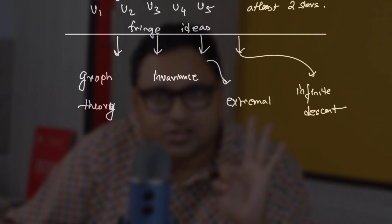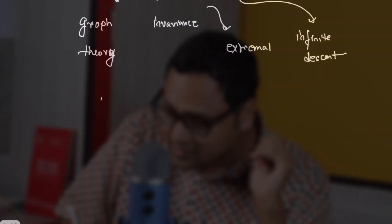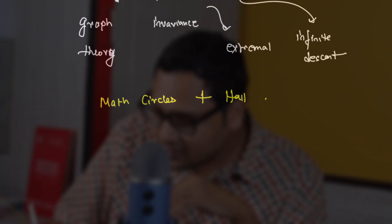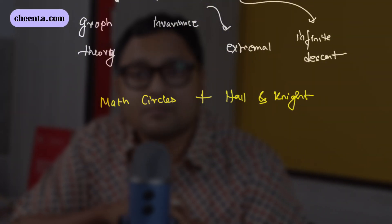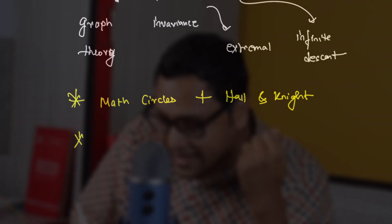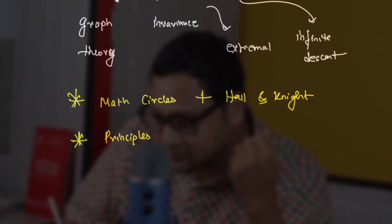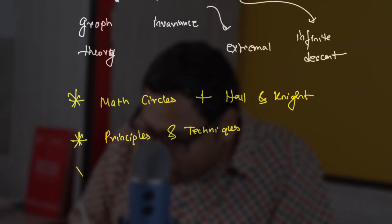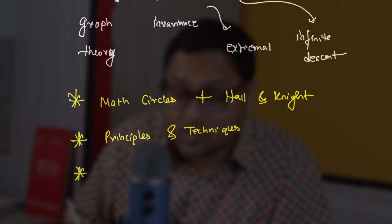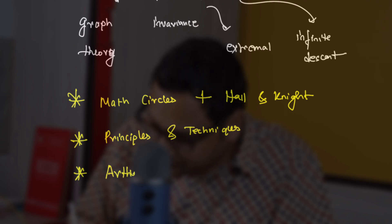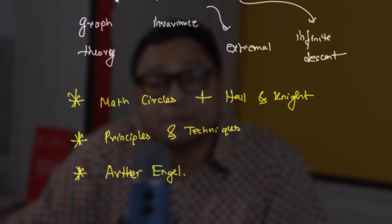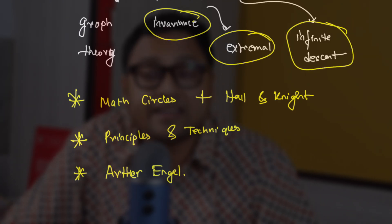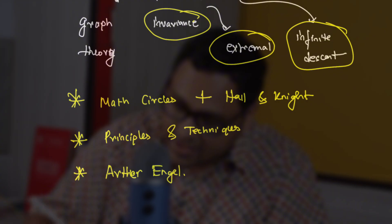I will refer three books to you. The first is Mathematical Circles — a fantastic book to get started with. You can also add Holland Knight's chapters on binomial coefficients for practice. The second book I really like is Principles and Techniques in Combinatorics — a very beautiful book with a lot of example and exercise problems. The third book I really like is Problem Solving Strategies by Arthur Engel. In this book, you'll find plenty of beautiful problems on fringe topics: invariance, extremal principle, infinite descent, and so on. If you really want to learn graph theory, Harary's book is really nice.